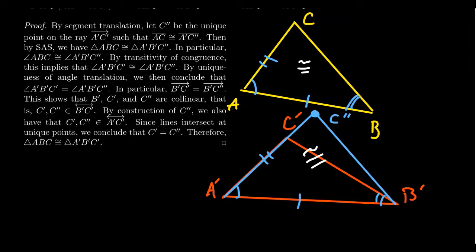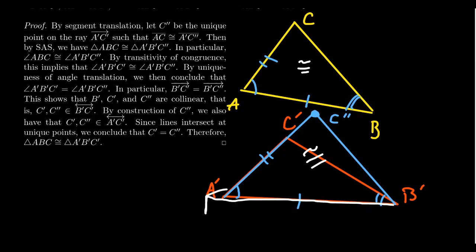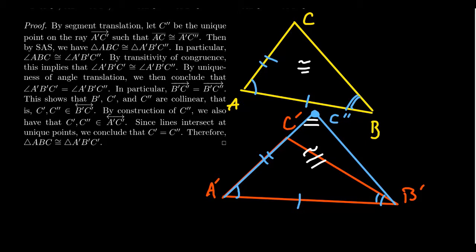So triangles ABC and A'B'C'' are congruent. In particular, because corresponding parts of congruent triangles are congruent, we get that angle ABC is congruent to angle A'B'C''. Now, by transitivity, since angle A'B'C'' is congruent to angle A'B'C' — they're both congruent to angle B — then by uniqueness of angle translation, notice where our angles live: both C' and C'' are on the same side of line A'B'. So by uniqueness of angle translation, these angles must be one and the same, meaning the point C'' and the point C' are actually the same point.